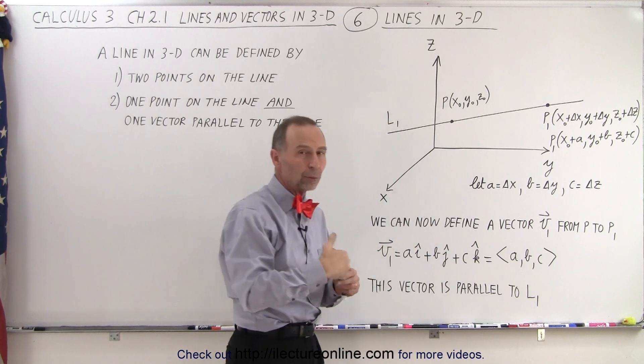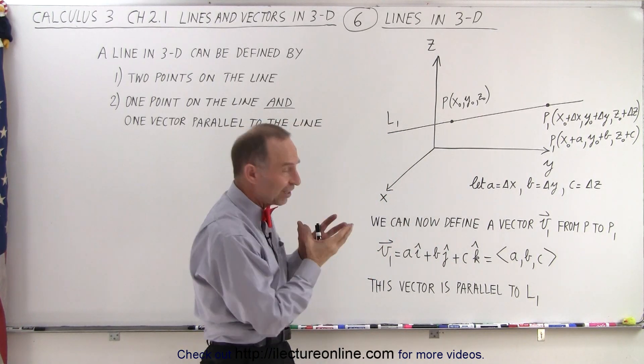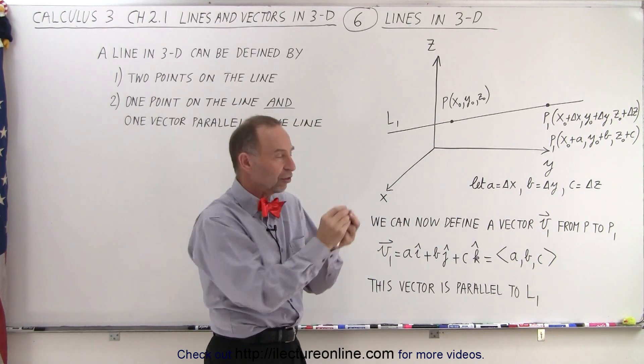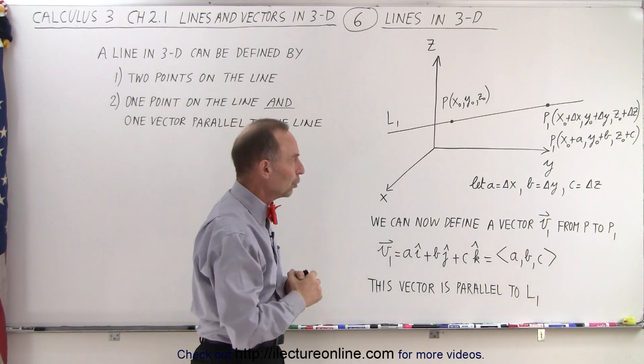So we denote that by x sub-naught, y sub-naught, and z sub-naught. So when you see that, typically that means that this is a known point on the line, and x, y, and z are known.